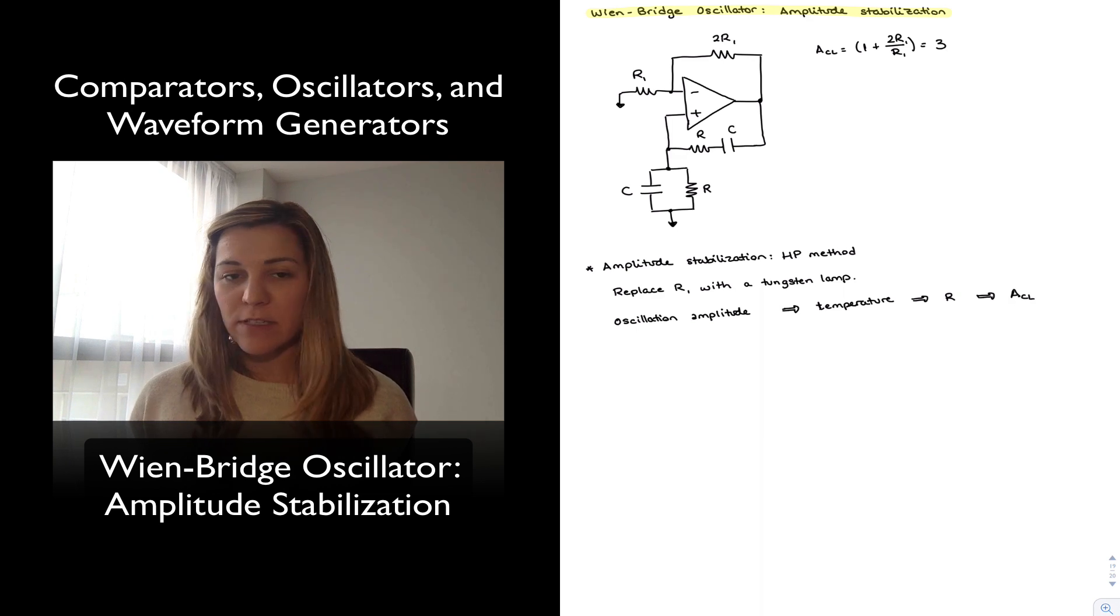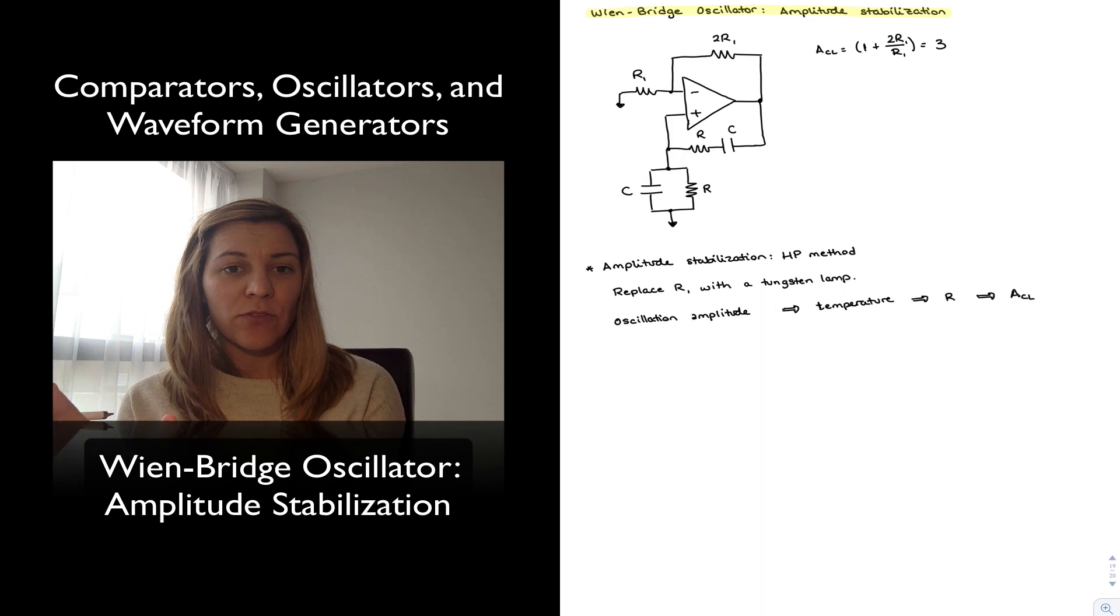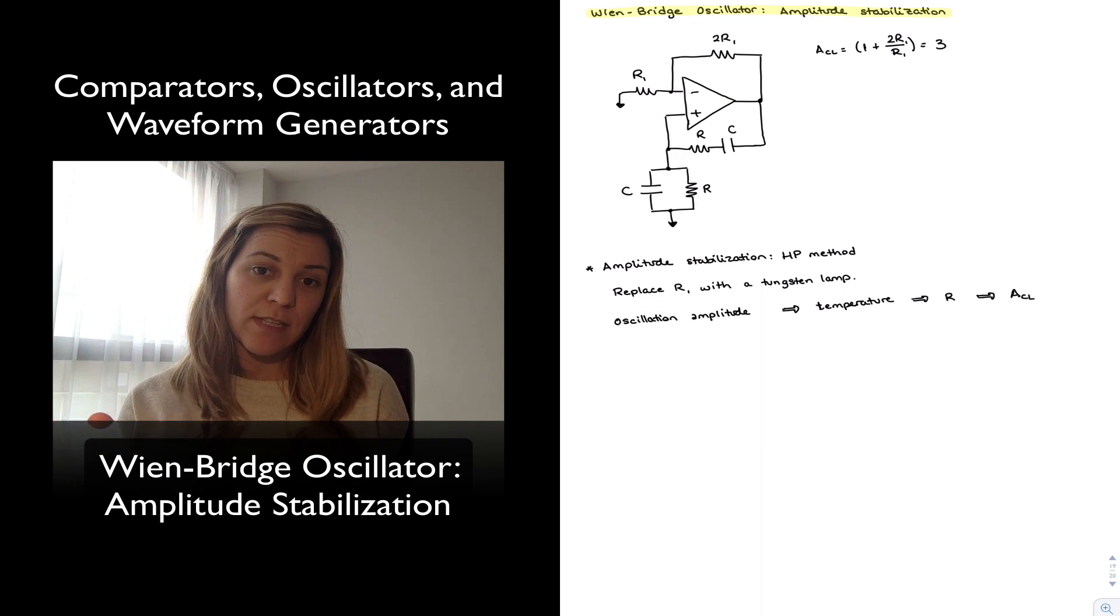And it consists of starting with a circuit that has a gain slightly greater than 3, and so we imagine that the oscillation is going to start increasing, and then having some sort of feedback, negative feedback mechanism, so that once that gain reaches 3, if it tries to increase past that,